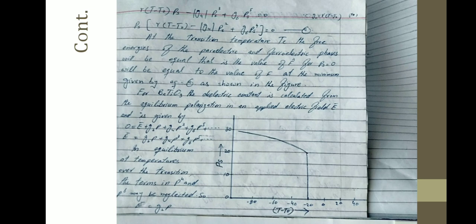Taking Pₛ common gives equation A. At the transition temperature Tc, the free energies of the paraelectric and ferroelectric phases will be equal — the value of F for Pₛ = 0 will equal the value of F at the minimum given by equation A. For barium titanate, the dielectric constant is calculated from the equilibrium polarization in an applied electric field E: 0 = -E + G₂P + G₄P³ + G₆P⁵.